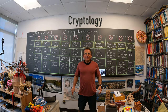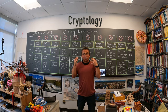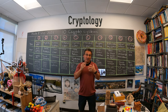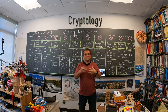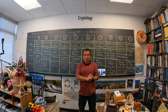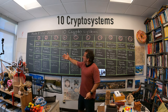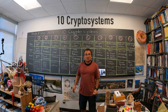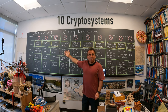Welcome to this lecture on cryptology. Cryptology consists of two things: cryptography, the writing of codes, and cryptanalysis, which is the decryption or reading of codes. Today I want to introduce 10 cryptosystems, mostly ordered historically.